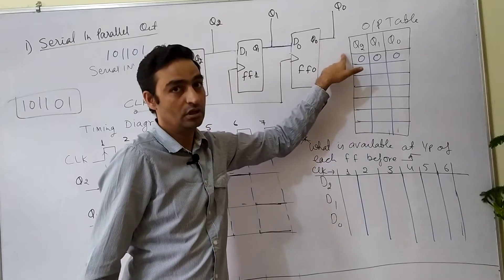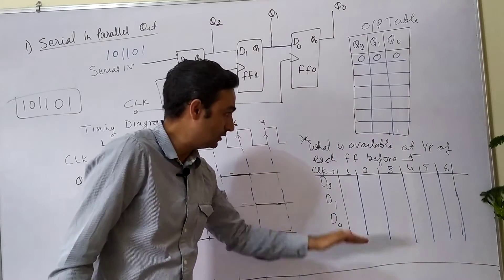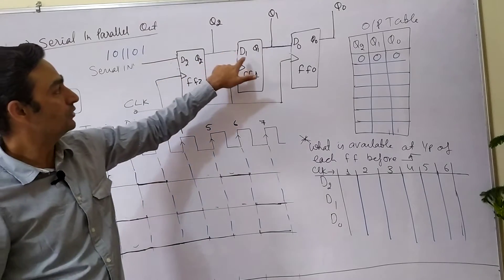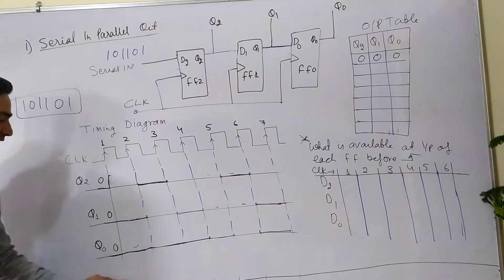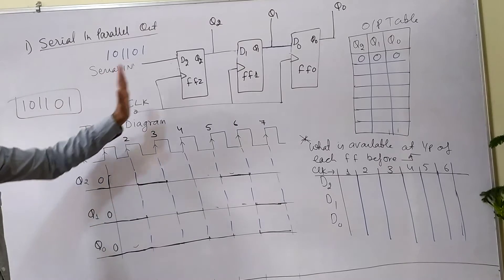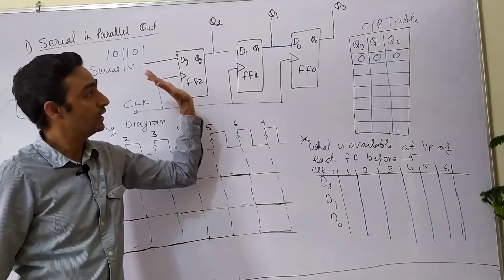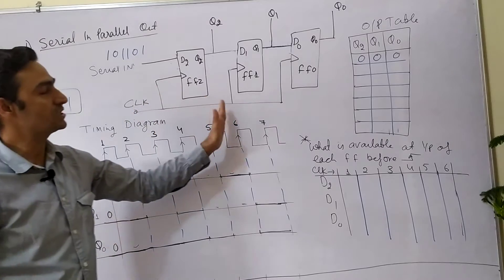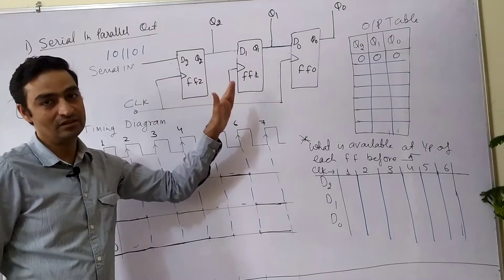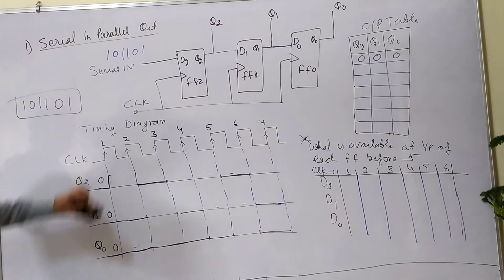This is the output table. Previously output was written like input, but now the output is a table. This table indicates what is available at input D2, D1, and D0 before the clock edge comes. This is the timing diagram, which indicates how the working of this network — the signal flow — is represented with the passage of time, showing where and when the signal is reaching. The data we are working with is 101101, which we are putting at the Serial Input Terminal.